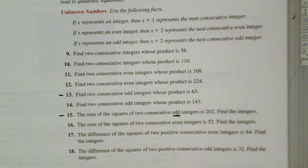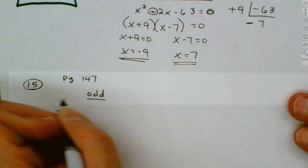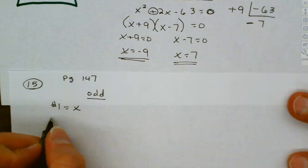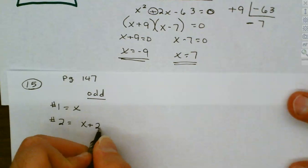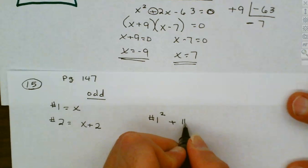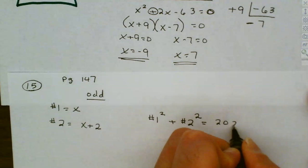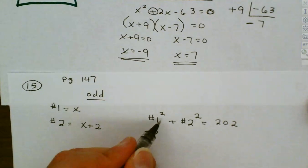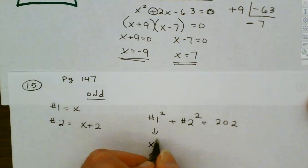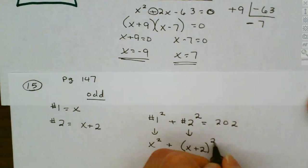We're going to be working with the sum of the squares. I've underlined 'odd,' so my gap is going to be 2. When I write these up, these are odd, so my first number is x and my second number is x plus 2. I'm taking the first number, squaring it, adding it to the second number squared, and it has to come out to give you 202. So: x squared plus the quantity x plus 2 squared equals 202.